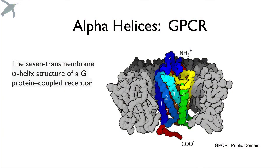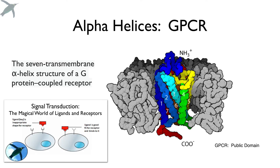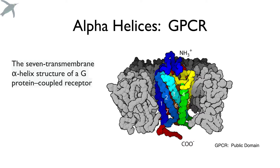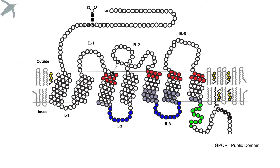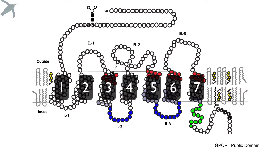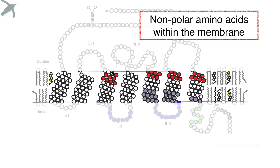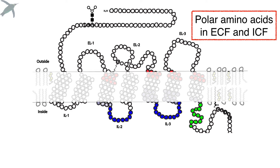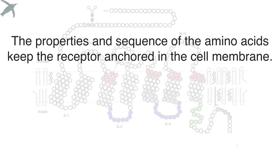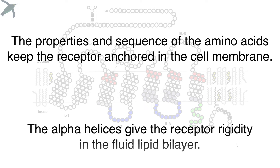This is a G protein-coupled receptor. The alpha helices represent membrane-spanning regions. There are seven places where this protein crosses the membrane. How does it stay there in the lipid bilayer? It's chemistry: the nonpolar amino acids are inside the lipid bilayer, and the polar amino acids are in the extracellular and intracellular fluids. The properties and sequence of the amino acids are what keep the receptor anchored in the fluid lipid bilayer. It is all about structure.